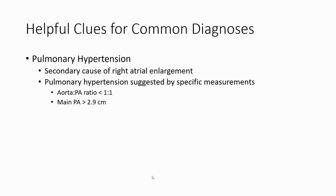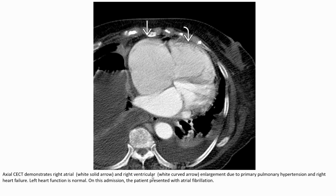If the ratio is less than one, the diameter of the aorta will be smaller than the pulmonary artery. The main pulmonary artery diameter should be more than 2.9 cm. These are the key measurements we need to determine.